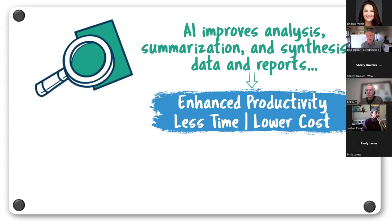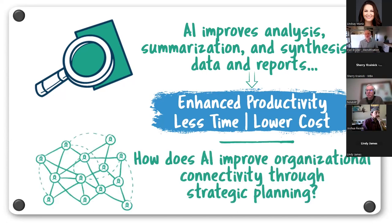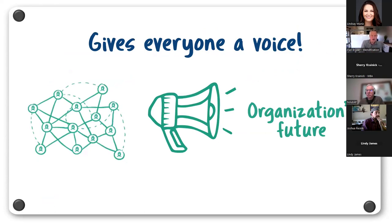We've been seeing a fairly consistent drop in productivity over the past several years, corresponding with a drop in connectivity within organizations. If I were in HR, I'd say: why don't we increase connectivity so we can enhance productivity? These things are closely linked — I'd even say they're blended. So how do we use AI to take us to another level through strategic planning to create greater connectivity? Essentially, we're giving everyone a voice in the organization's future.